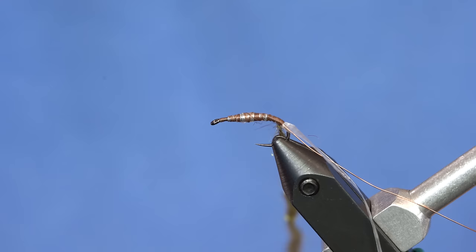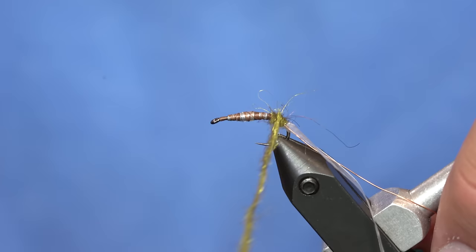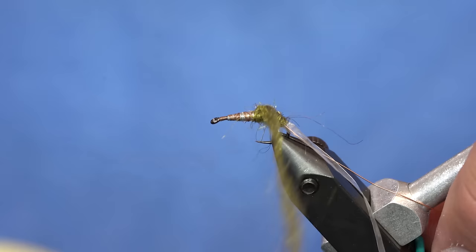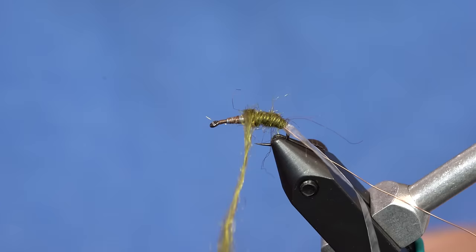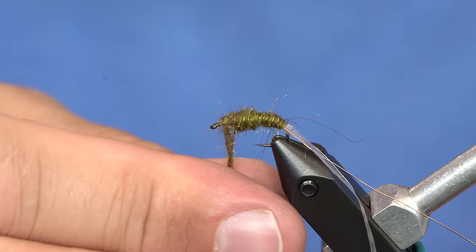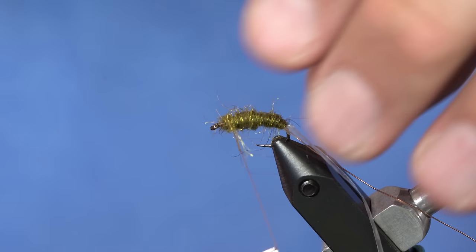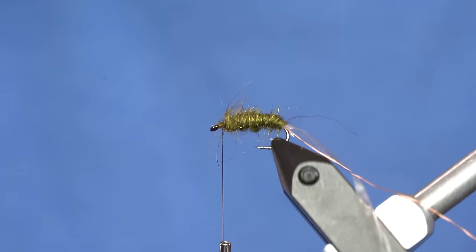And as you can see, it kind of separates from the thread a little bit, and that's fine. So except for right there, we're going to twist that down a little. So alright, we've got a really messy dubbed body.